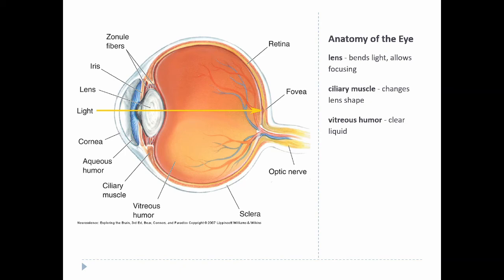Sometimes epithelial cells slough off inside the eye and float around in the vitreous before breaking down. You can actually see these — called floaters — by staring at a bright solid surface like a blue sky, where you'll notice tiny faint objects drifting across your vision. Otherwise, the main job of the vitreous is simply to let light pass through to the retina, the layer of cells lining the back of the eye where light-detecting cells and neurons that send signals down the optic nerve to the brain are found.